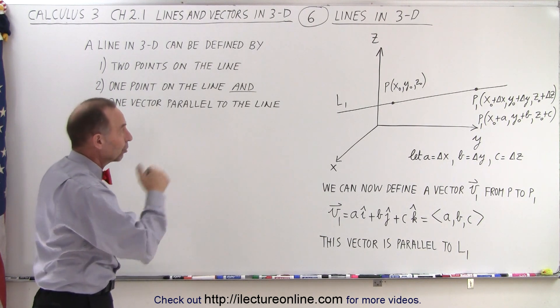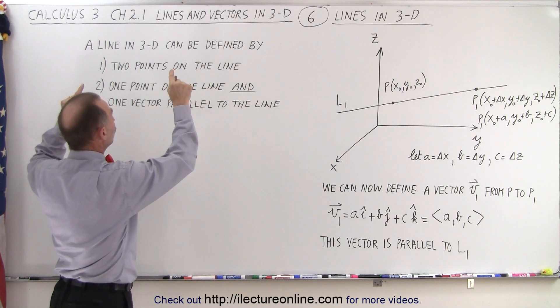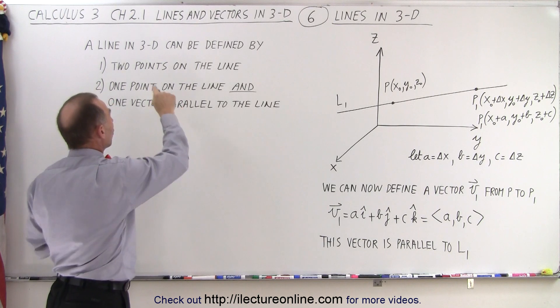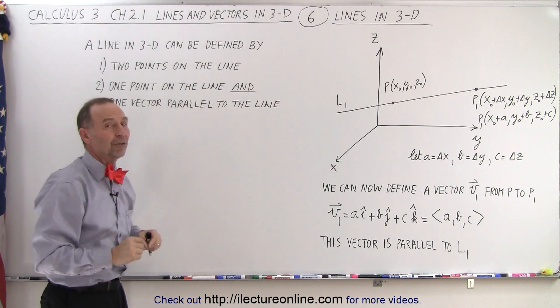So in order to define a line in three-dimensional space, we need to know two points on the line, or we need to know one point on the line and a parallel vector to the line.